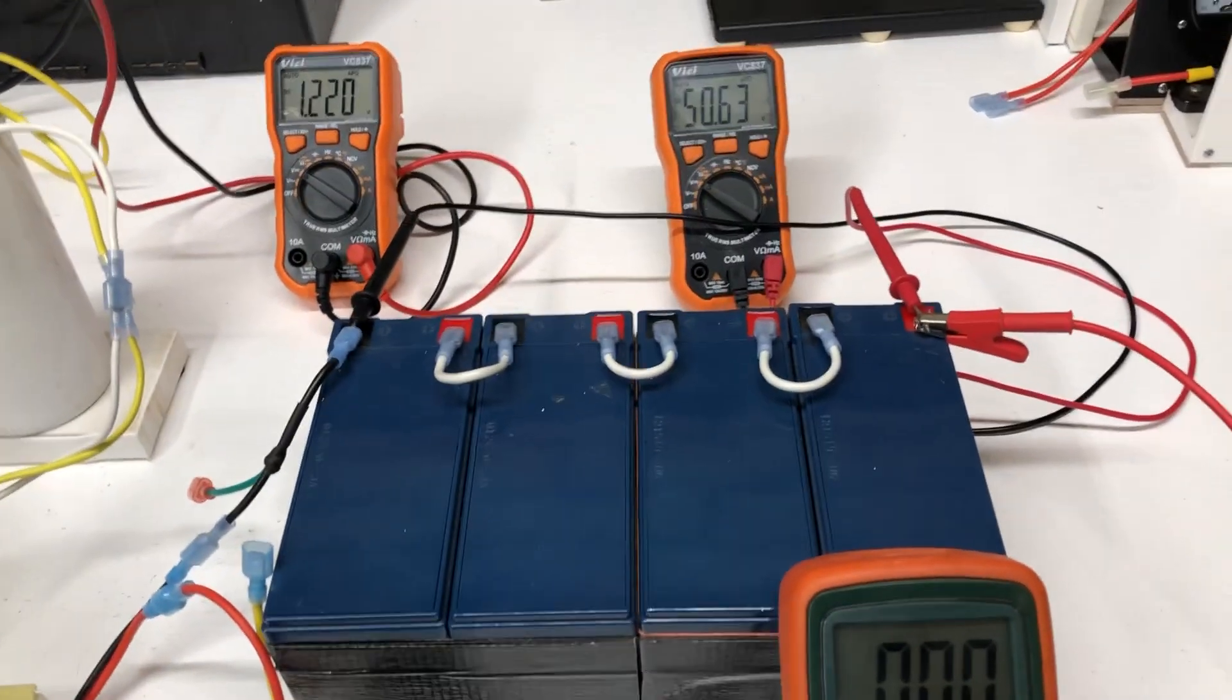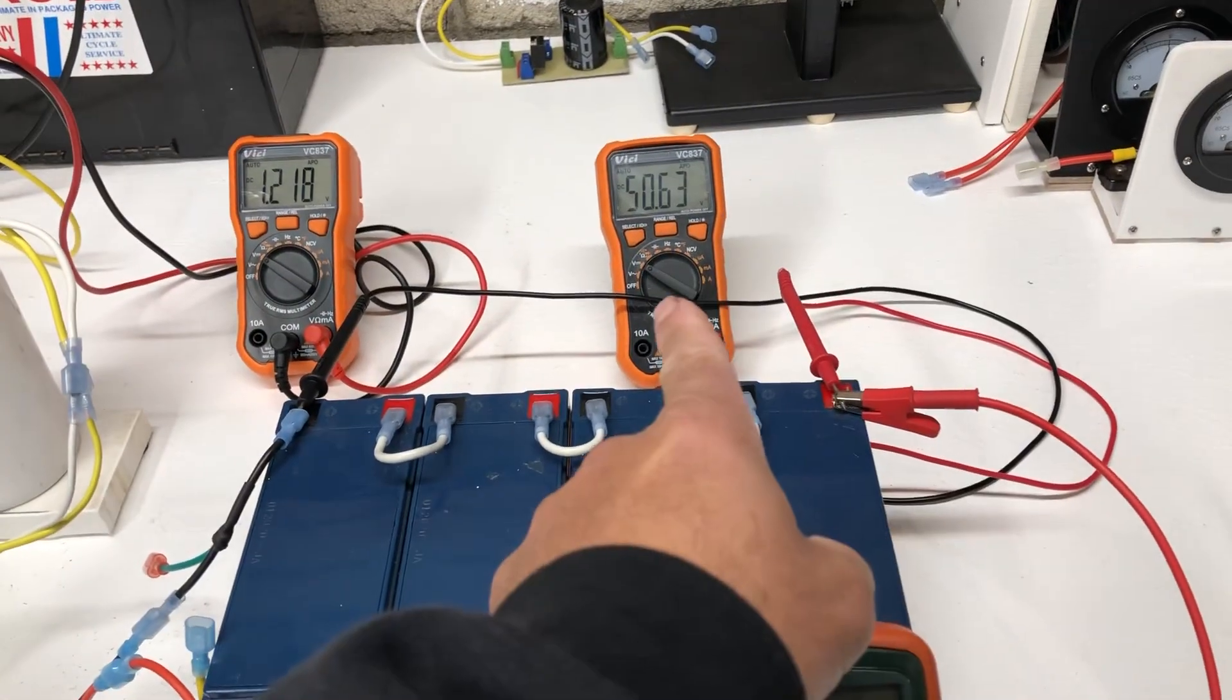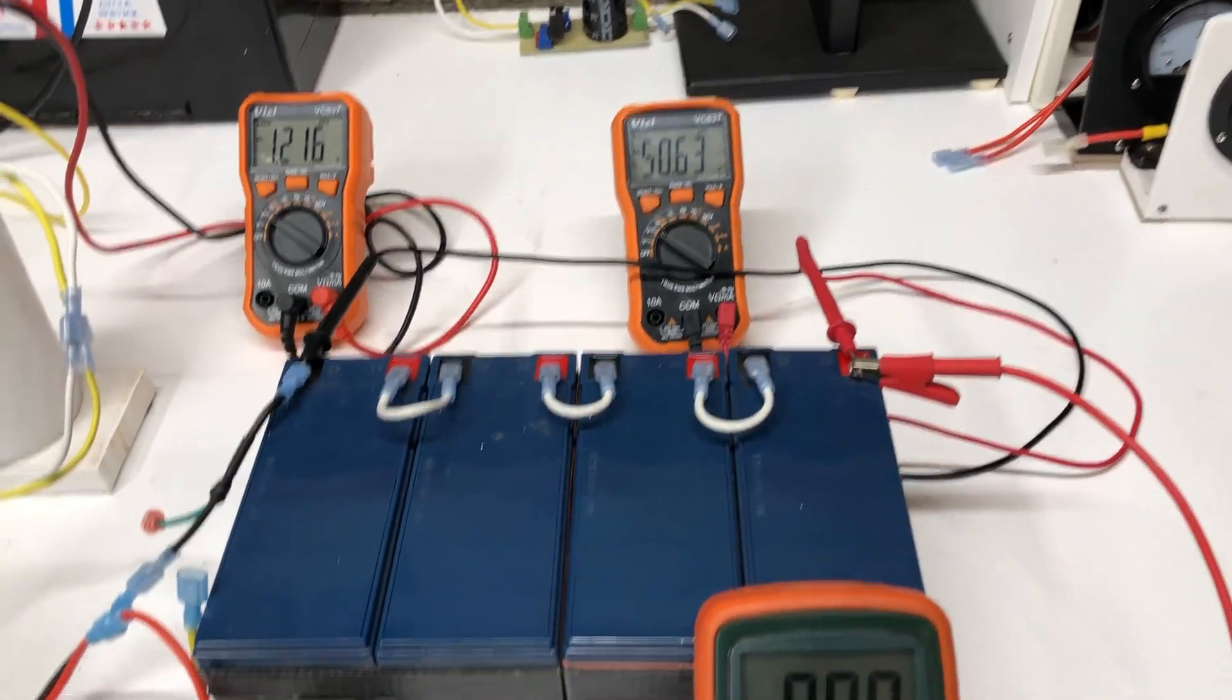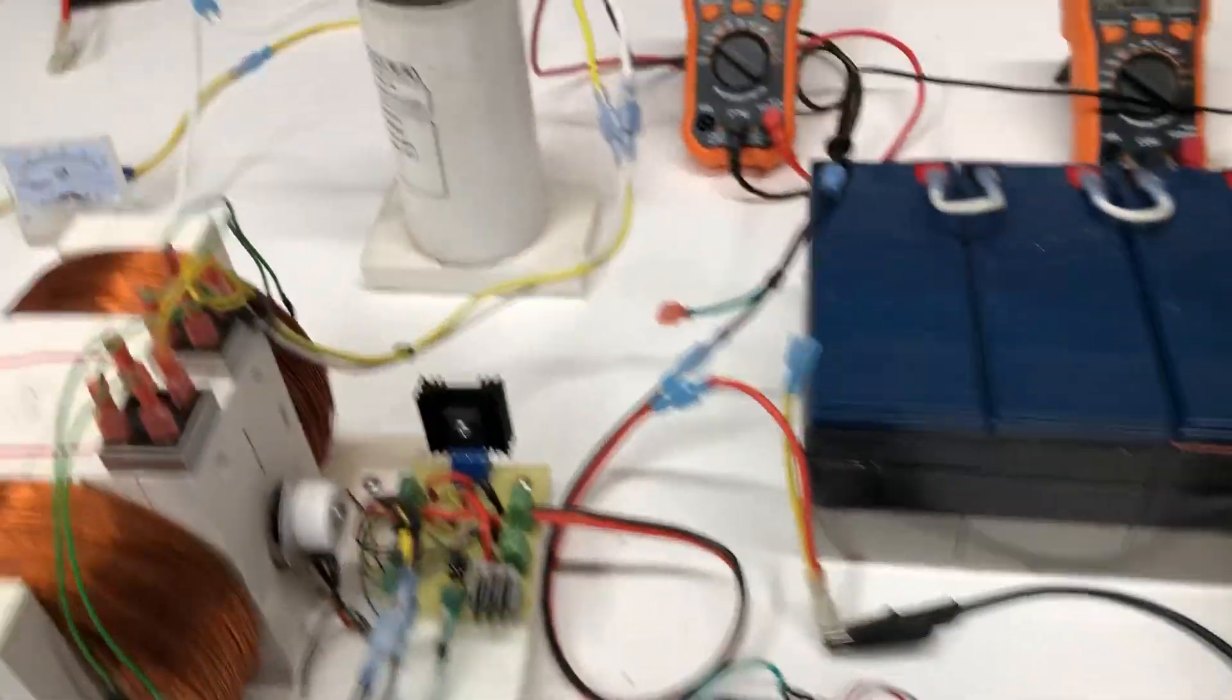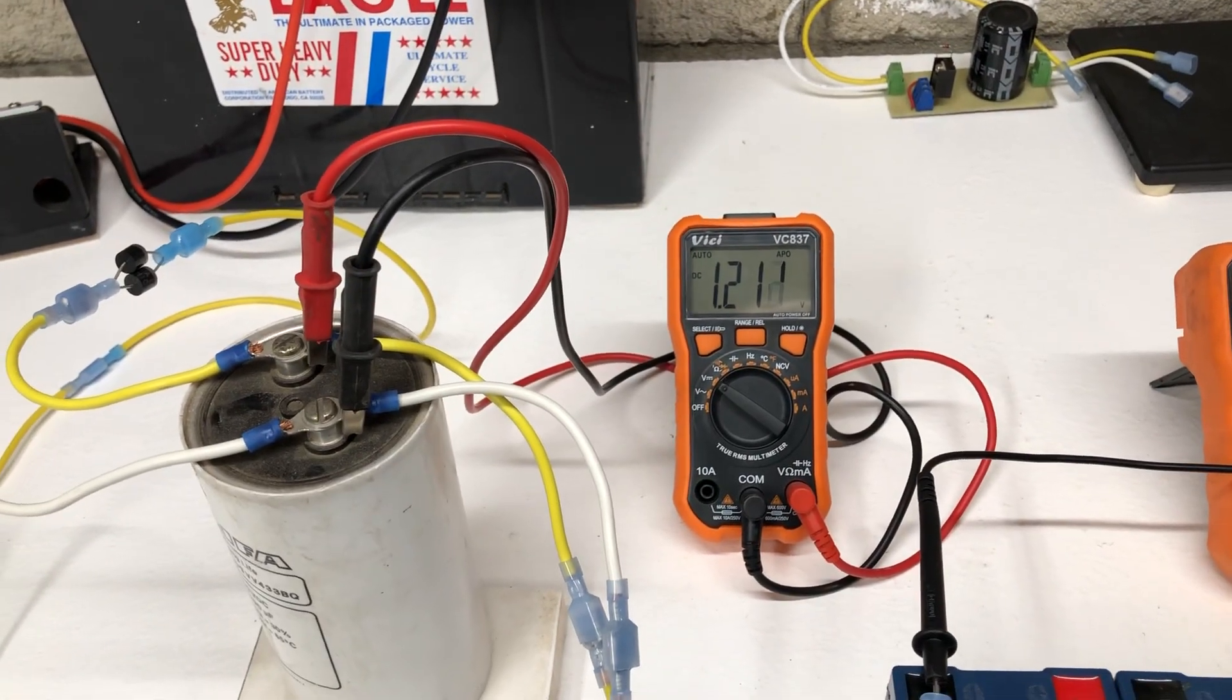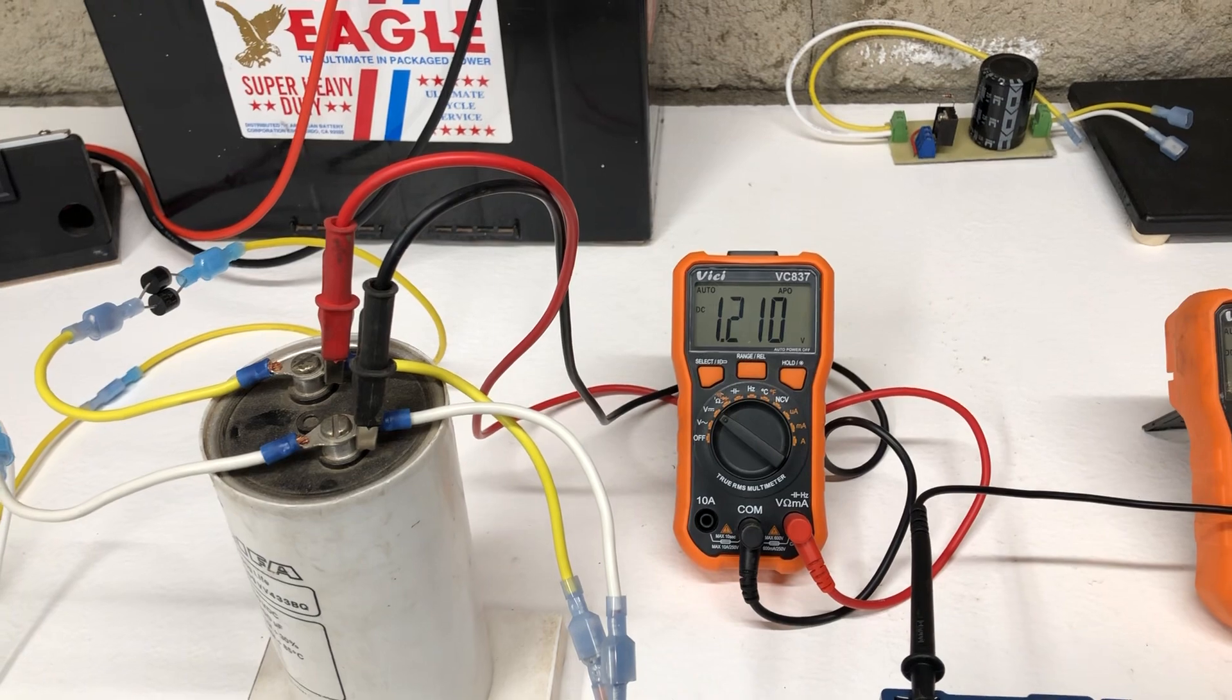We have a 48 volt battery measuring 50.63 volts. This is the amp meter for what the motor is going to be using. Here's the volt meter for the capacitor sitting at 1.2 volts.